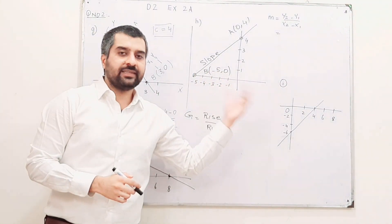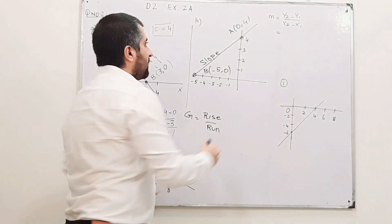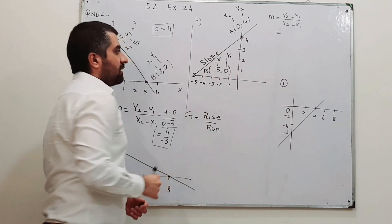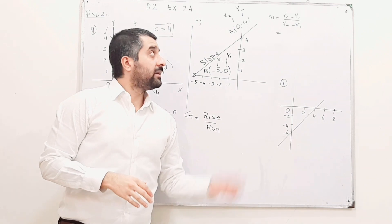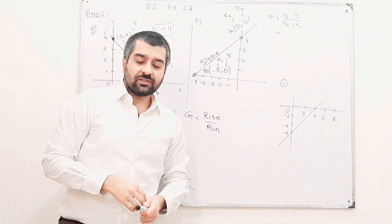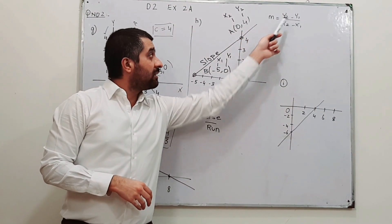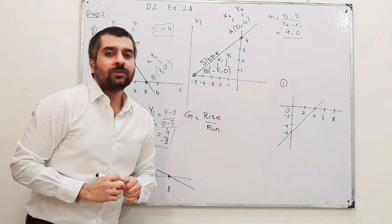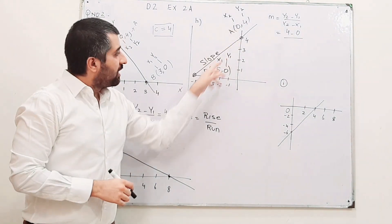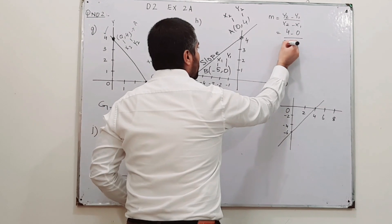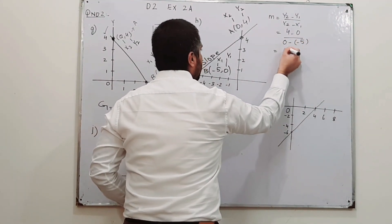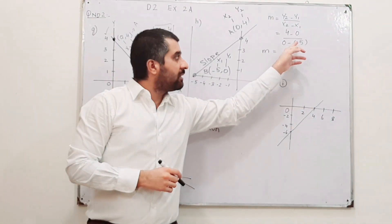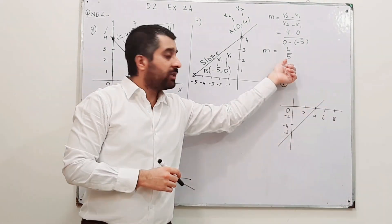Name your coordinates as x1, y1 and x2, y2. If this is x2, this is y2; if this is x1, this is y1. After naming them, insert them to find the gradient: y2 is 4, y1 is 0, so 4 minus 0 over x2 minus x1. x2 is 0, x1 is minus 5, so 0 minus (−5). The minus outside the bracket and minus inside cancel, giving plus 5. So the gradient is 4 over 5.